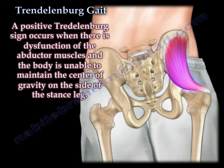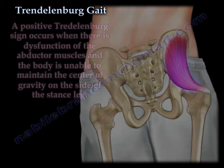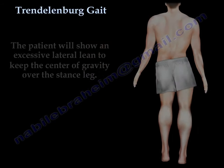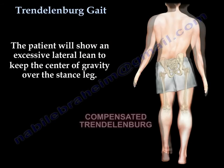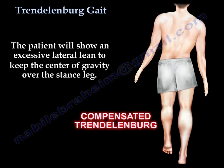A positive Trendelenburg sign occurs when there is dysfunction of the abductor muscles and the body is unable to maintain the center of gravity on the side of the stance leg. The patient will show an excessive lateral lean to keep the center of gravity over the stance leg.